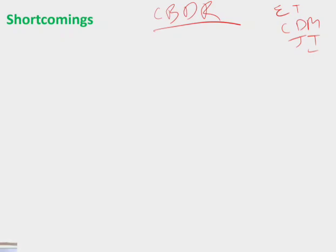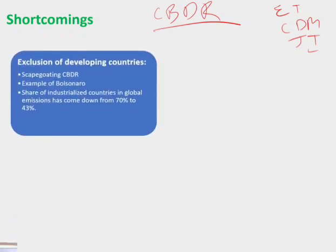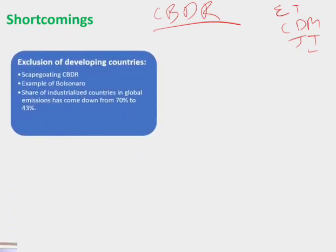The second commitment period was going to run from 2012 to 2020. We will keep this in mind as we discuss the shortcomings. The first shortcoming is the exclusion of developing countries.